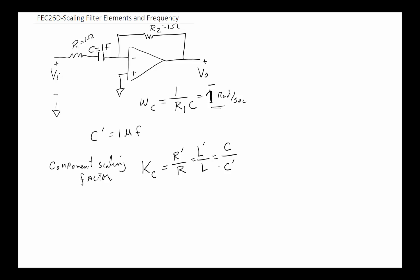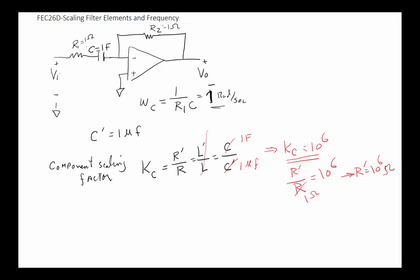Let's apply this concept. We want our capacitor to go from one farad to one microfarad. That tells us the component scaling factor K_C needs to be 10^6. We don't have inductors in this active filter, so we only need to worry about resistors. To hold the equation correct, R' over R must also equal 10^6. Since both R1 and R2 are one ohm, the new resistors must each be one megaohm.